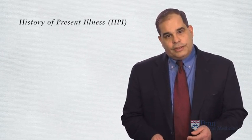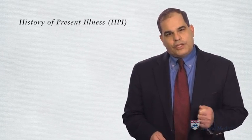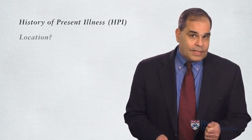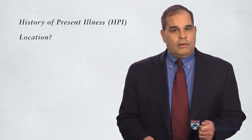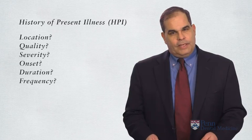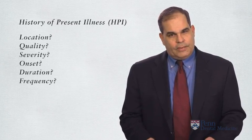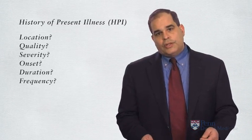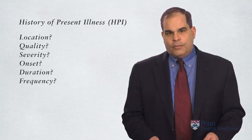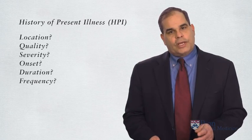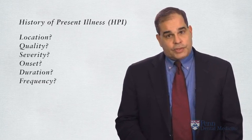Returning to the history of the present illness — it really develops the chief complaint, which often focuses around a symptom such as pain. You ask about the location of the pain, its quality, its severity, and its onset. What happened when you first noticed it? How long does the pain last? A toothache typically lasts until treated, whereas neurologic pains can come on and go away quickly and then return. So it's important to understand the onset, duration, and frequency of a symptom such as pain.